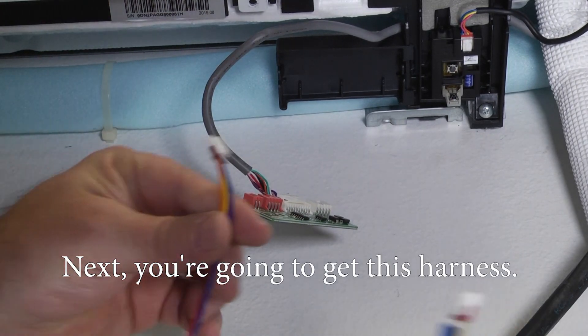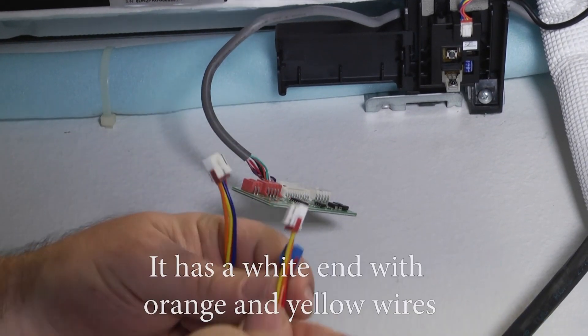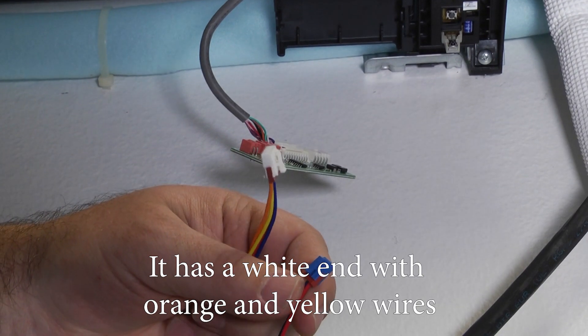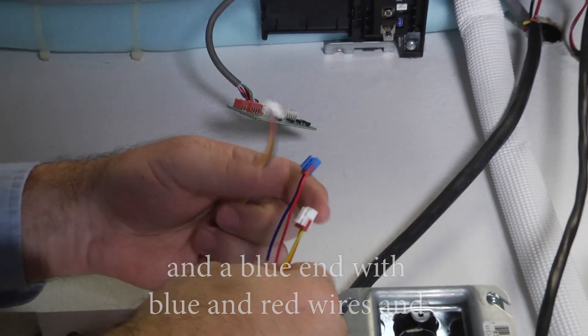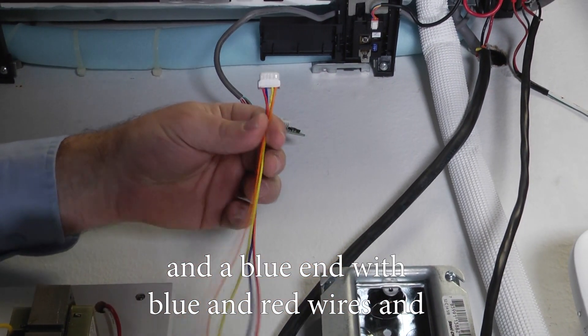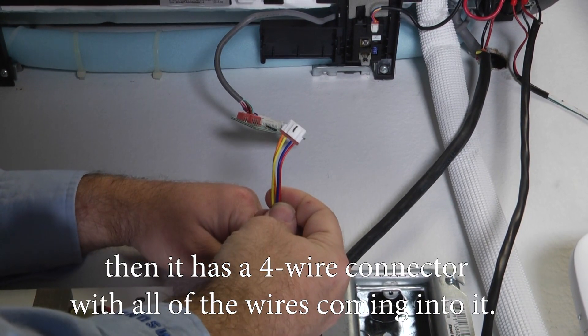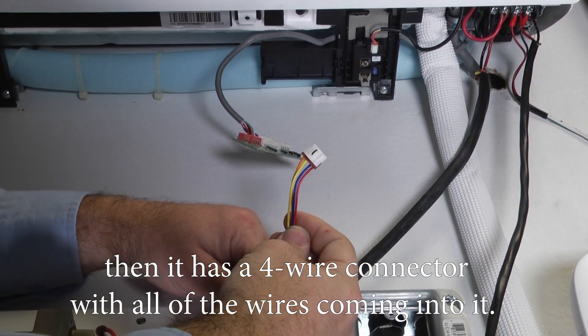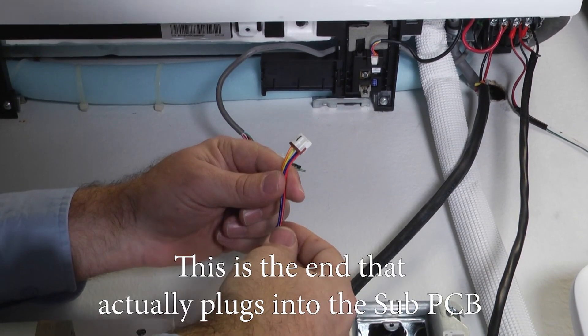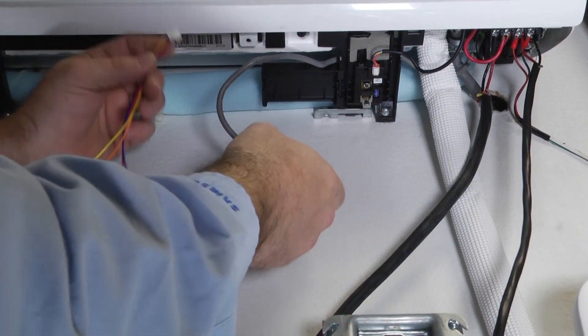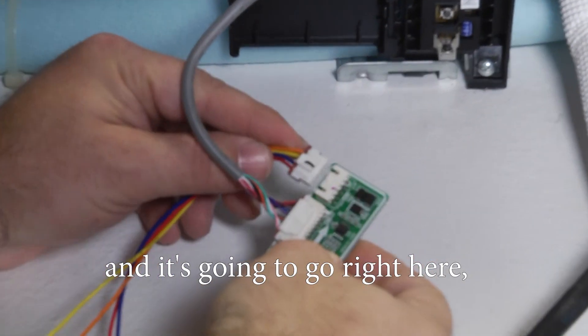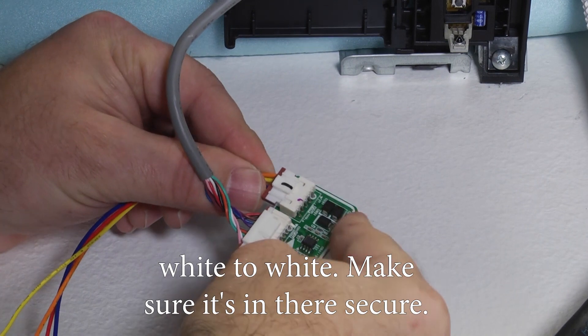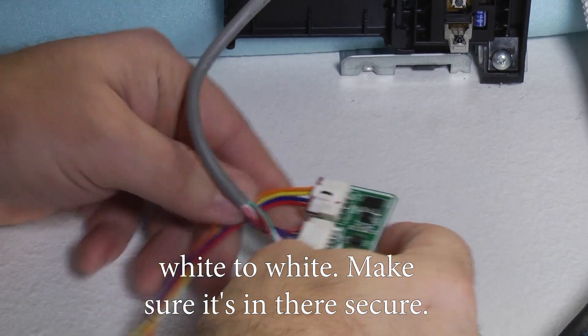Next you're going to get this harness. It has a white end with orange and yellow wires and a blue end with blue and red wires, and then it has a four wire connector with all the wires coming in it. This is the end that actually plugs into the sub PCB and it's going to go right here white to white. Make sure it's in there secure.